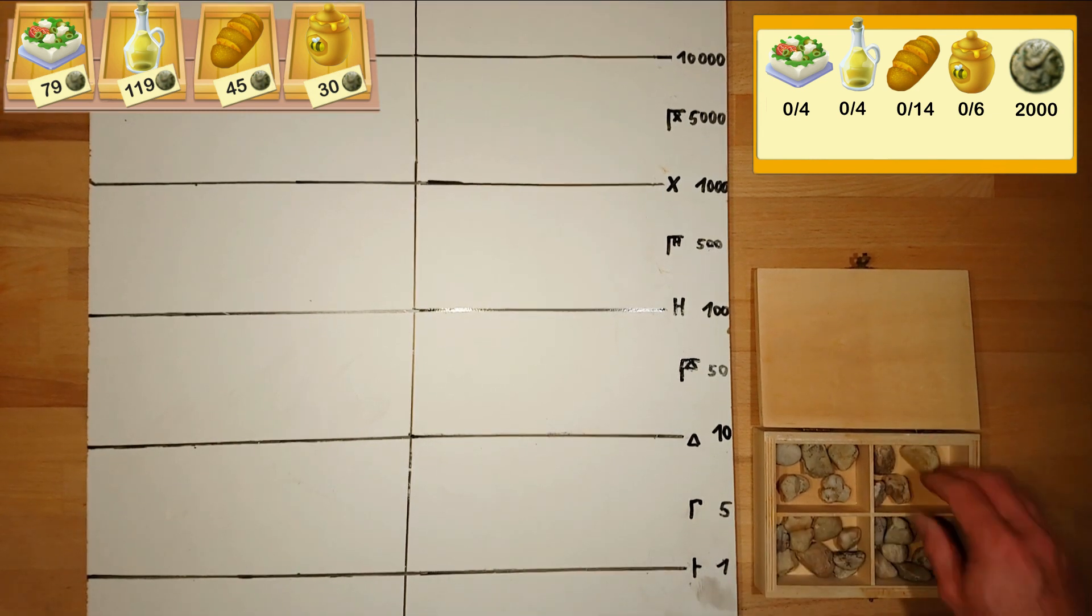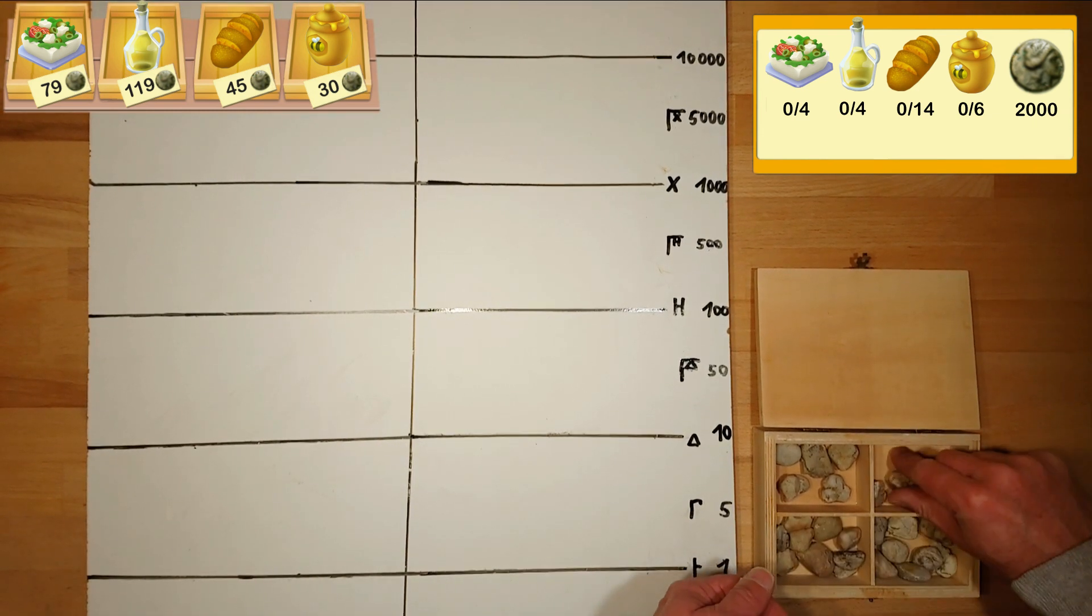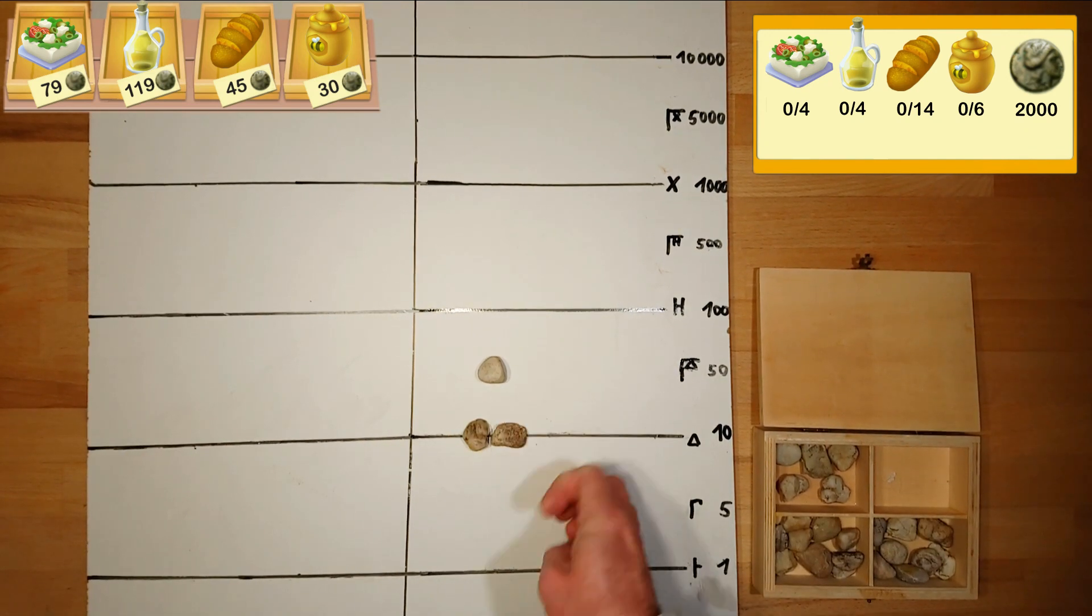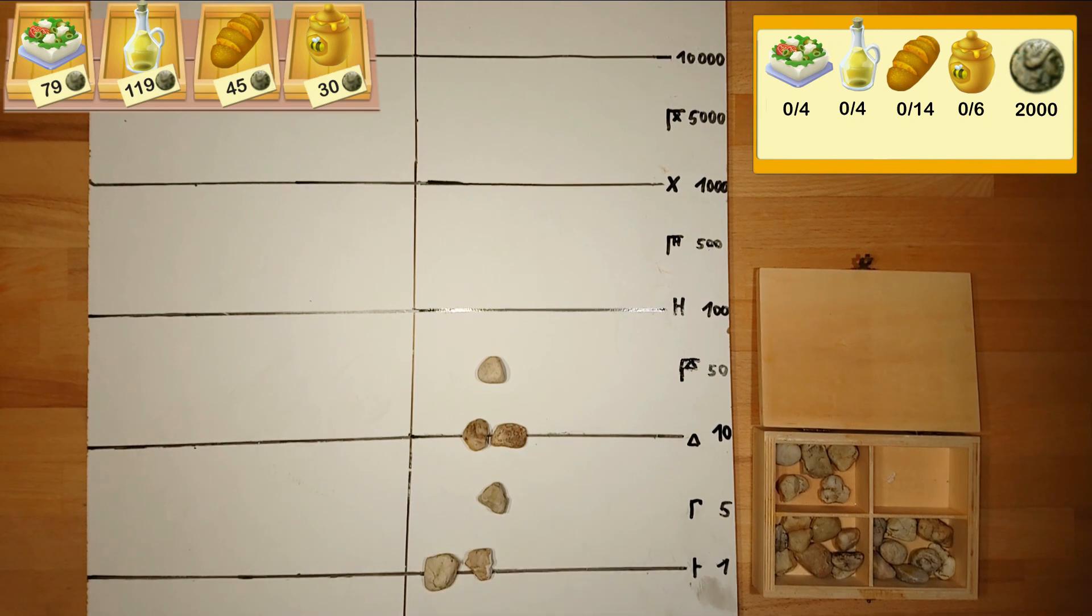Let's start with one feta cheese for 79. How is that amount represented on the board? We lay one pebble at 50, two at 10, one at 5 and four pebbles at 1.